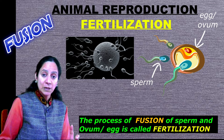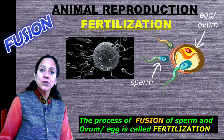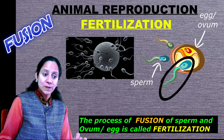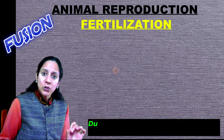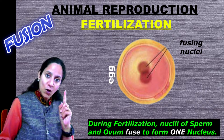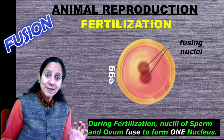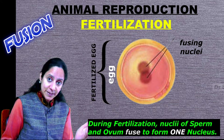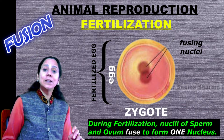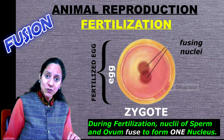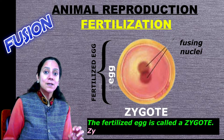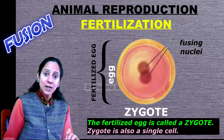Sperm, which are in millions, come closer to the egg, surrounding it, and one sperm fuses with the egg. During fertilization, the nuclei of sperm and ovum fuse to form one nucleus within the egg. This egg is now called a fertilized egg, and scientifically it is called a zygote. During sexual reproduction, the nuclei of sperm and ovum fuse together to form a single nucleus within the egg, and that egg is now called a fertilized egg or zygote.